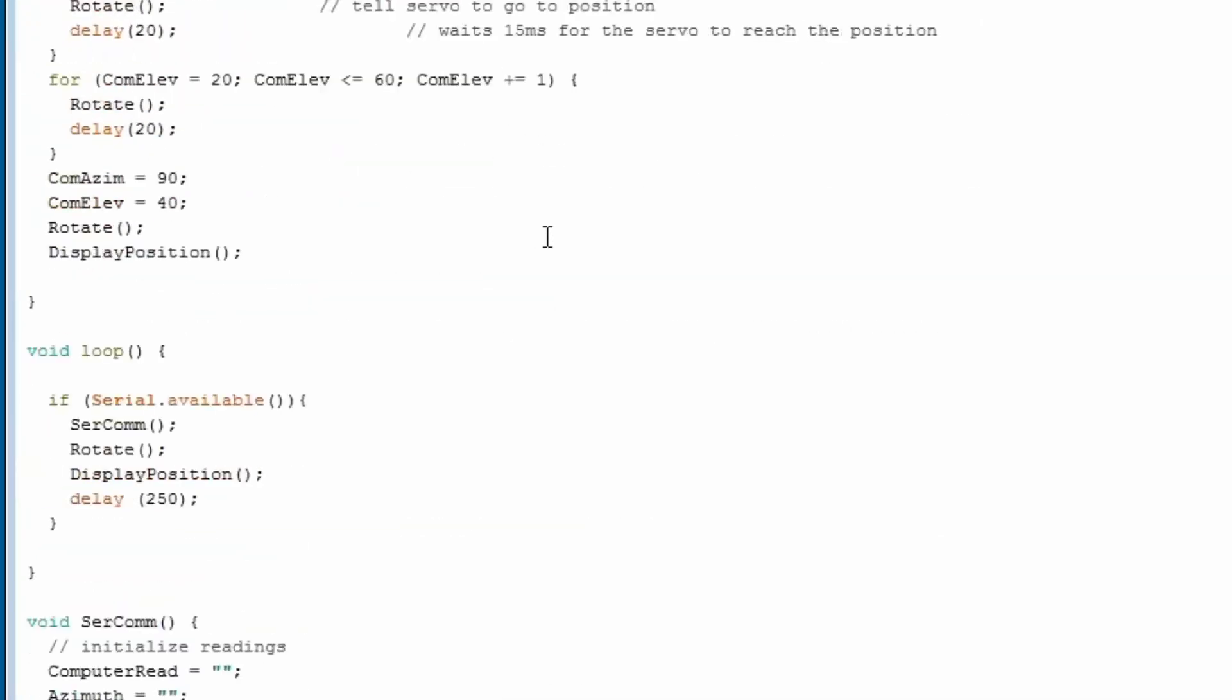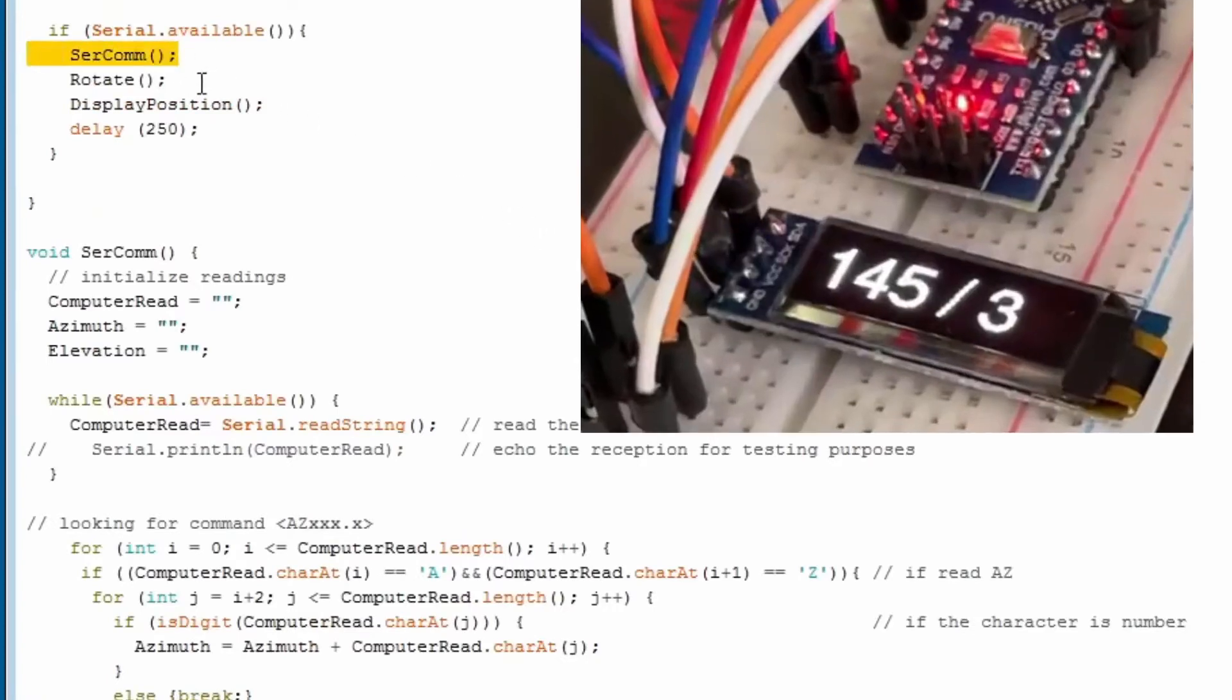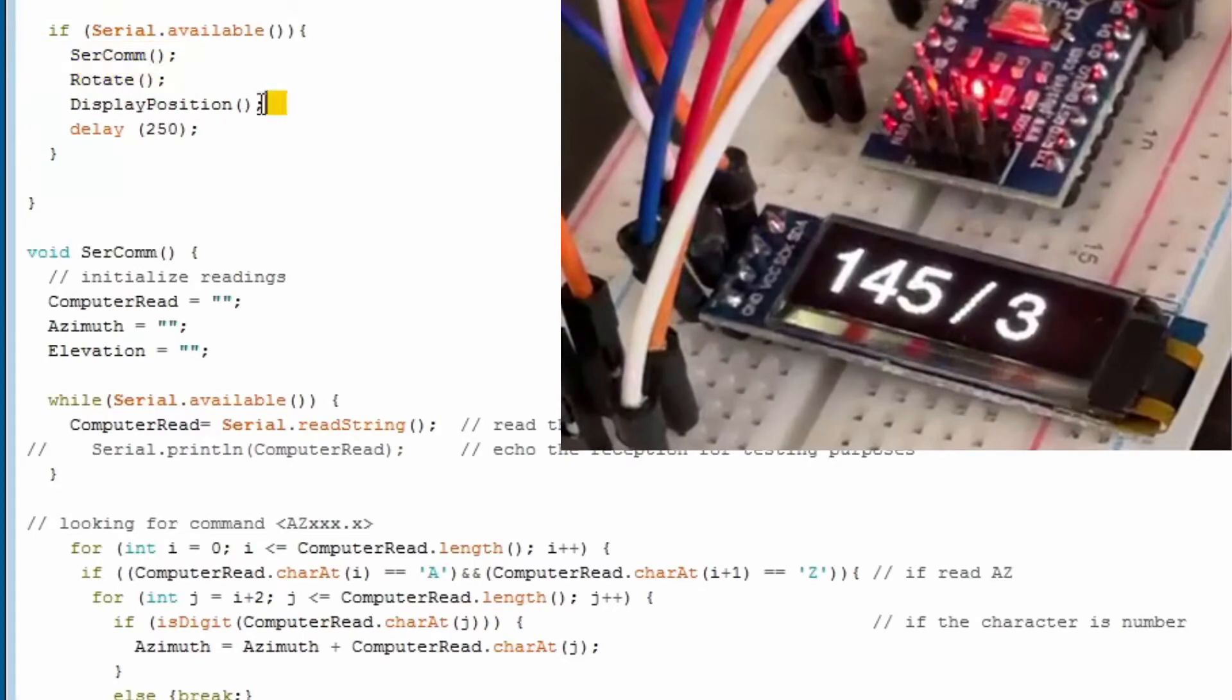The code is simple. You receive the antenna direction on USB, you move the servos and you display the position. Initially, I added an OLED display to show the position, but later decided not to use it.